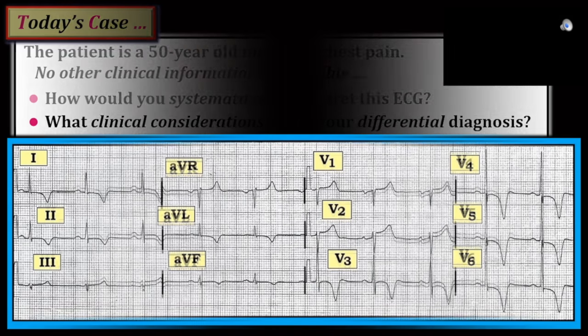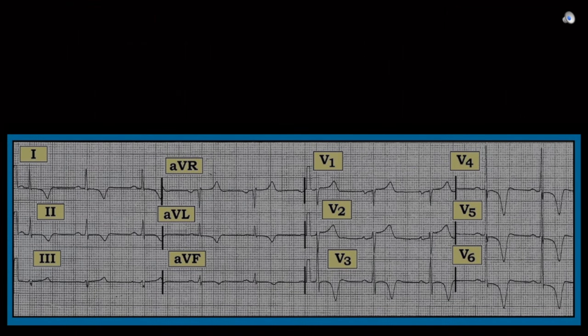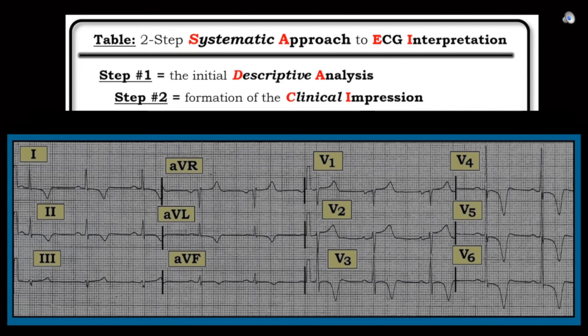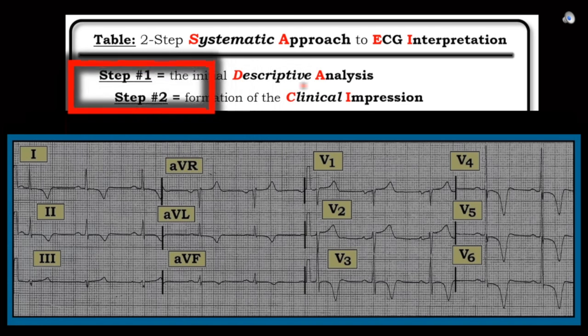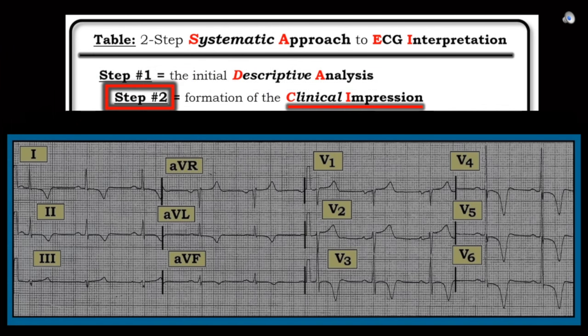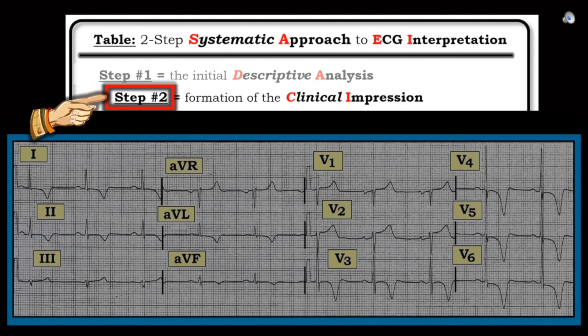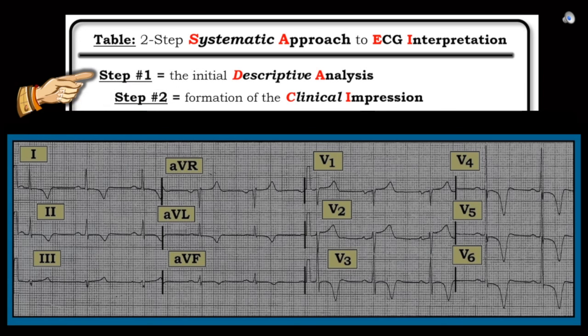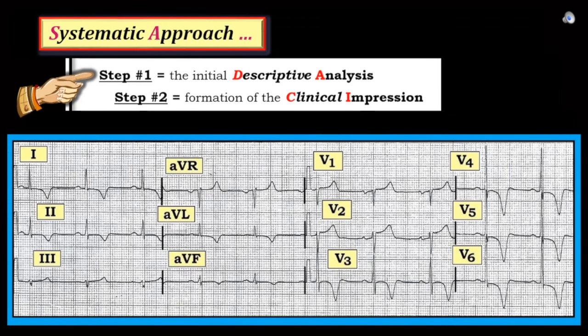I'll begin with a few comments on my general approach for interpreting any ECG I encounter. I favor use of a two-step approach, with the two steps being descriptive analysis and the clinical impression. My purpose for specifying two steps is in the hope that interpreters won't jump to the second step before completing the first. There's a tendency with tracings like this one to jump at the obvious finding, which here is the very deep T-wave inversion seen in multiple leads. But there are other important findings on this tracing that would be all too easy to overlook if one isn't using a two-step systematic approach.